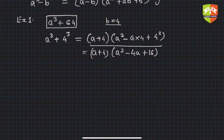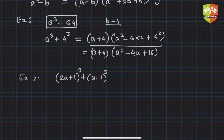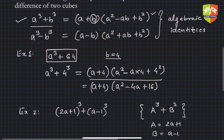Let's take another example: (2a + 1)³ + (a - 1)³. If you look at this, it is of the form a³ + b³, where a is clearly (2a + 1) and b is (a - 1).